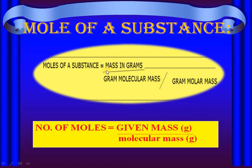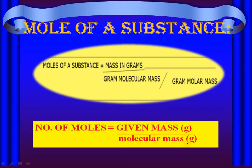Basically, the mole of a substance is mass in grams divided by gram molecular mass or gram molar mass. If we have to find the number of moles, we use the formula: number of moles = given mass in grams divided by molecular mass. The molecular mass is available if you remember the atomic masses. If you are watching this channel for the first time and you don't remember atomic masses, I suggest you memorize them. With atomic mass, you can easily do the mole concept.